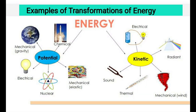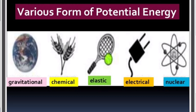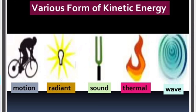Let us understand it with the help of examples of energy transformations. We know that there are various forms of potential energy like gravitational, chemical, elastic, electrical, and nuclear potential energies, and also various forms of kinetic energy like motion, radiant, sound, thermal, and wave kinetic energy. Their inter-conversion takes place.